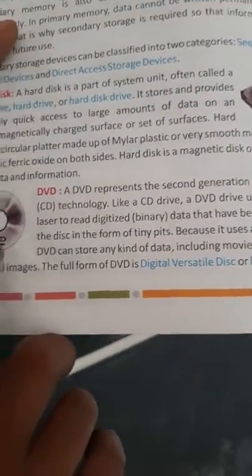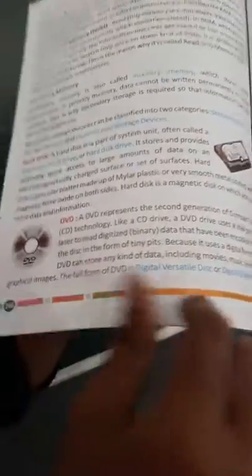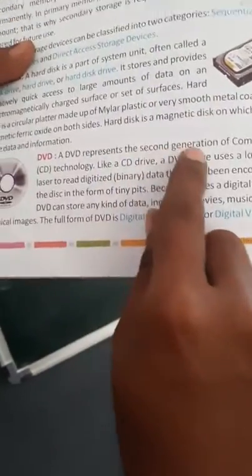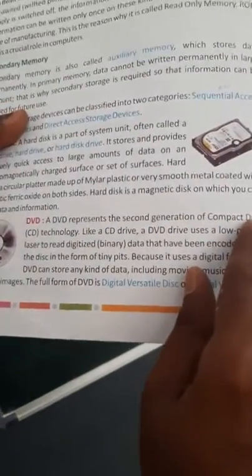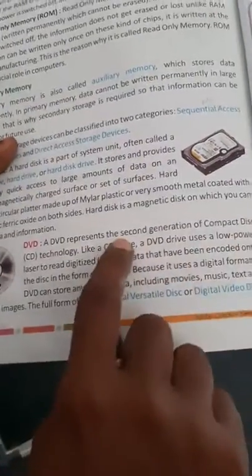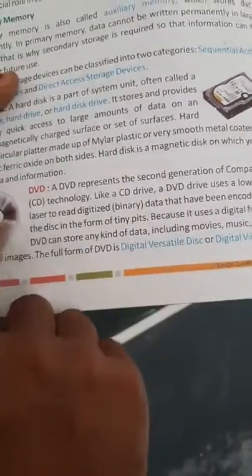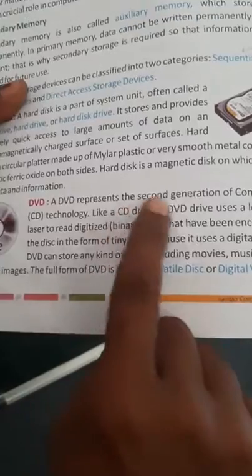CD has 600 to 700 MB storage, DVD has 4.5 to 4.7, nearly 4.7 GB storage capacity. A DVD represents the second generation of compact disk. Storage is more than CD, so it is second generation of CD.